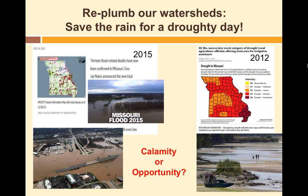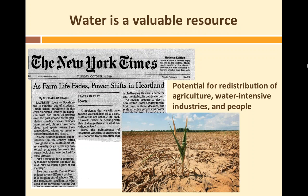My take-home message is that we need to re-plumb the watersheds. When we have rainfall and then droughts, if we save the rain when it comes by re-plumbing our watersheds, we will actually have higher water tables and water to use when it gets dry. As we think about places that alternate from floods to droughts — is it a calamity? Yes, definitely a disaster, but if we can reduce vulnerability to risk and save the water when it comes, we can actually view it as an opportunity. On a national level, water is a valuable resource — the Northeast has water, and as the Midwest dries and agriculture declines, people will rethink where to put agriculture and water-intensive industry. Thank you.